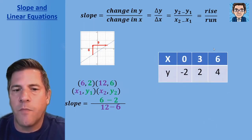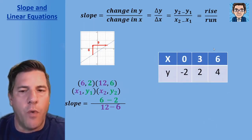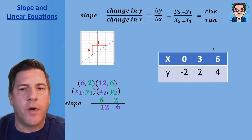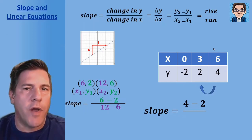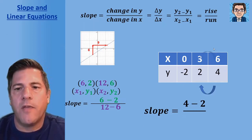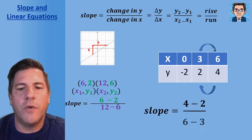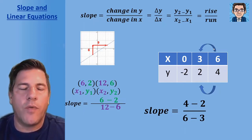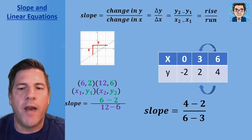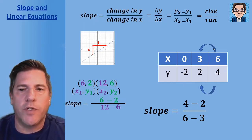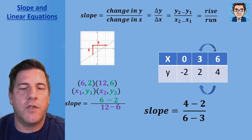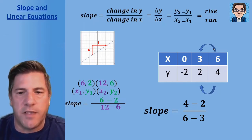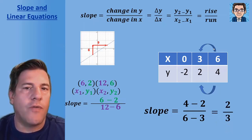If we have a table of values, it's very similar to doing it with two points — we just pick one pair of points to use. Here, four and two give us the numerator, and six and three give us the denominator. We can pick any points. One thing to keep in mind: we've got to go in the same direction. So if we go four minus two, we've got to do six minus three — don't switch it around. Keep consistent, and we get two over three.